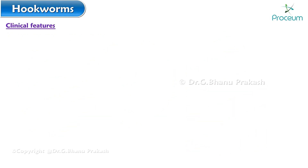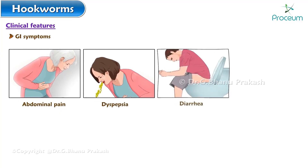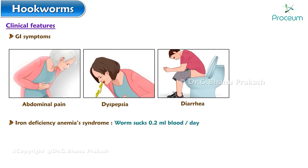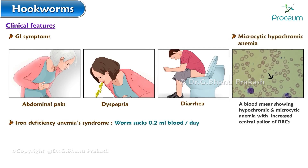Clinical features of hookworm infection include gastrointestinal symptoms like abdominal pain with sharp postprandial accentuation, dyspepsia, and diarrhea. Iron deficiency anemia syndrome is also seen, as this worm sucks 0.2 milliliters of blood per day, resulting in microcytic hypochromic anemia.